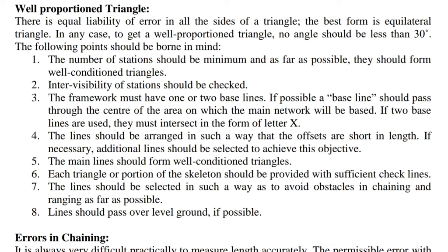Lines should be arranged so that offsets are short in length; if necessary, additional lines should be selected. The main lines should form well-conditioned triangles. Each triangle or portion of the skeleton should be provided with sufficient check lines. Lines should be selected to avoid obstacles in chaining and ranging as far as possible, and should pass over level ground if possible.